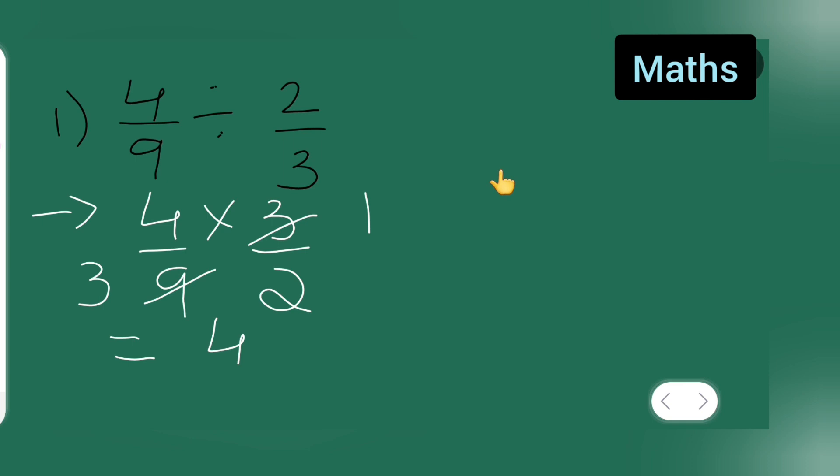Or else what you can do is you can cancel these terms. 2 ones are 2, 2 twos are 4. So 2 upon 3 will remain. So answer is 2 upon 3. So I hope you have understood how to solve this type of division, and thanks for watching.